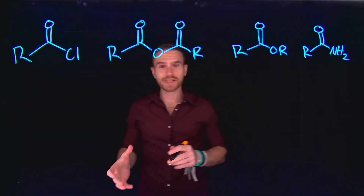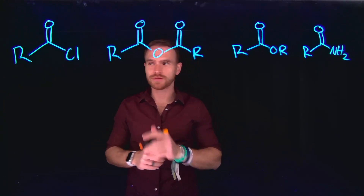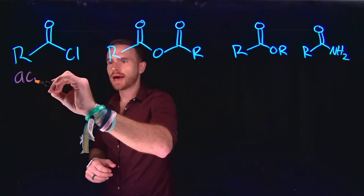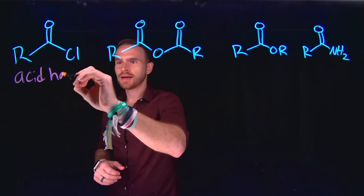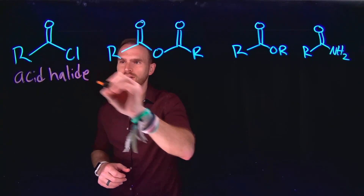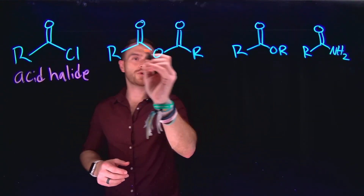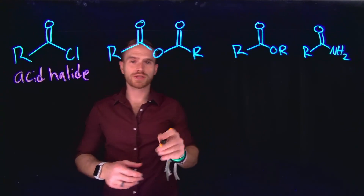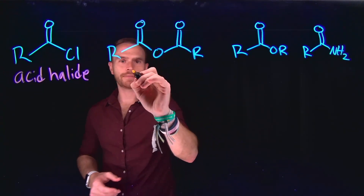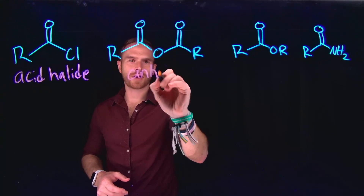First, let's break down the main classes of carboxylic acid derivatives. On the screen, you see that we have acid halides. Specifically, the example shown is going to be an acid chloride. Anytime you have two carbonyl groups flanking either side of a center oxygen atom, this is called an anhydride.